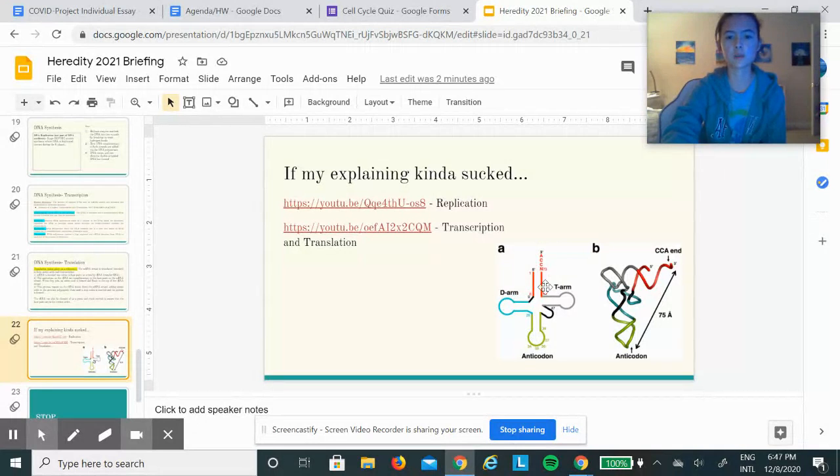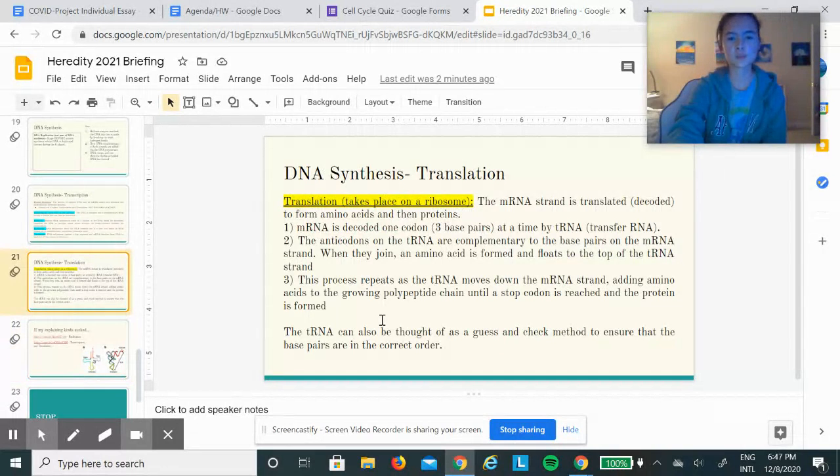An amino acid is made when the tRNA connects to the mRNA. The amino acid is formed and flows to the top.